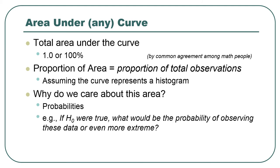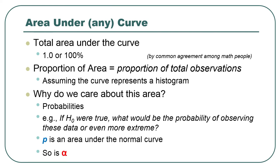We ask the p-value question: if the null hypothesis were true, what would the probability be of observing these data or even more extreme? We can use the normal distribution curve to approximate that probability. We can approximate p, which is that area, and we can approximate alpha, which is another area like that. We do this all the time — area equals proportion.